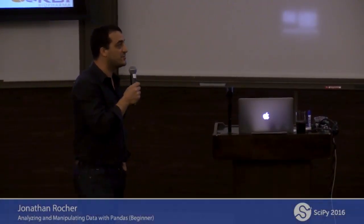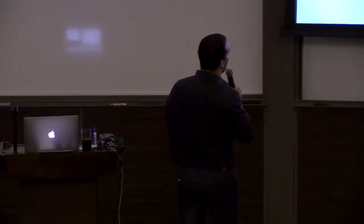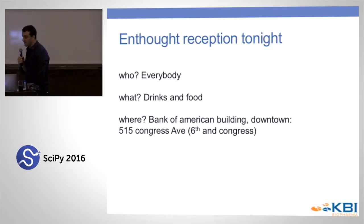Just a quick announcement before we start. Everyone should have received an email about the reception tonight. If you want to meet old friends or make new friends from the community, come have a drink with us. Everyone is invited — there'll be food, drinks, kegs of beer and good Tex-Mex food. It's going to be at the Anthot offices downtown at 6th and Congress. There are buses, taxis, and Uber options to get there. It's from 6 to 9 tonight, so feel free to join us.